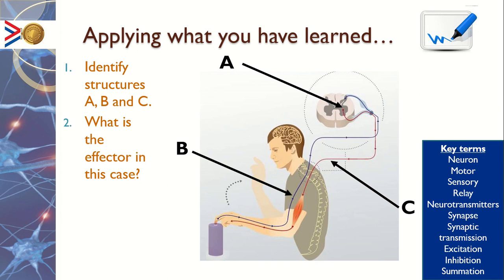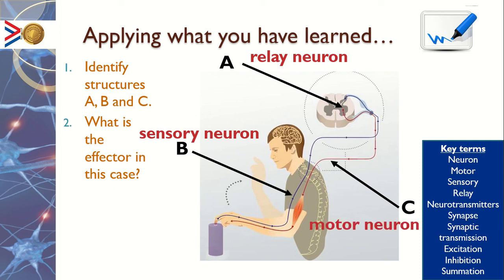This is a perfect example of the three neurons interacting. You should be able to explain that A is the relay neuron going up into the brain, B is the sensory neuron passing information up to the relay neuron, and C is the motor neuron passing the message back down to the arm to tell it to move away from something hot.